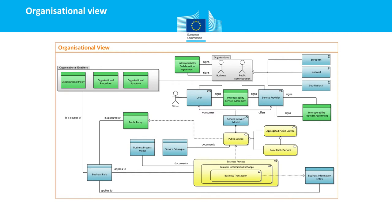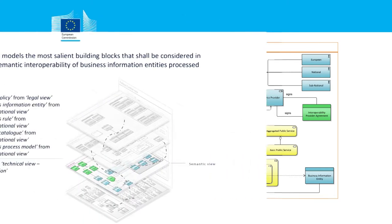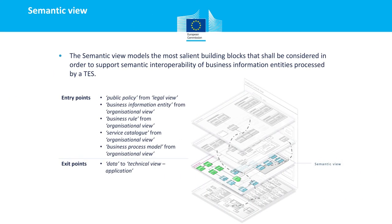The public service is implemented by a business process, which is the highest building block in the hierarchy implementing a public service. The business process is divided into sub-processes called BS Information Exchange and BS Transaction, which access the BS Information Entity — any business object that can be treated or managed by a BS Transaction.